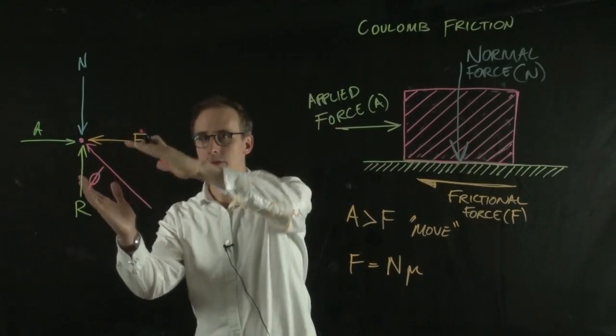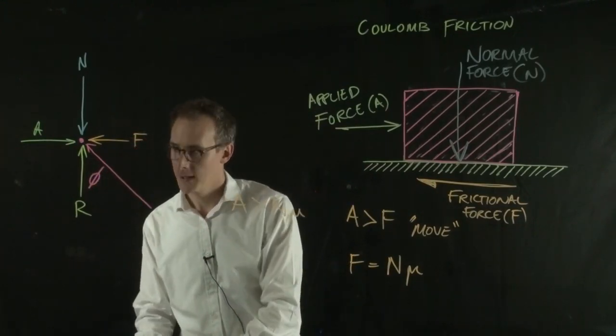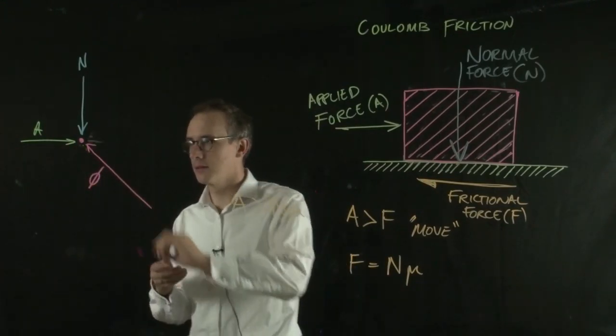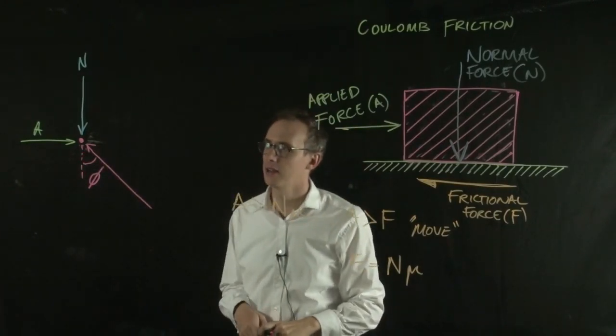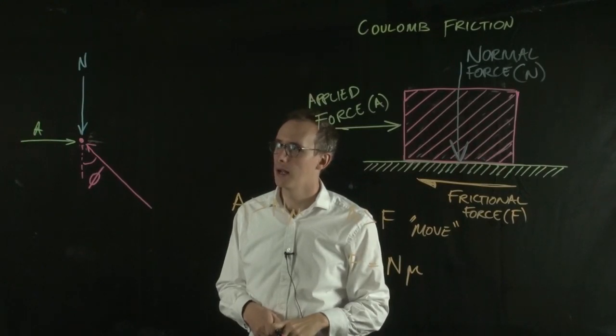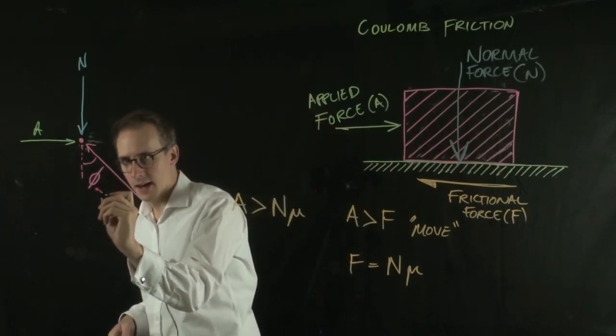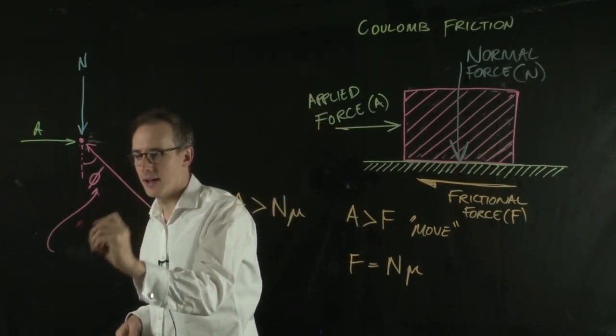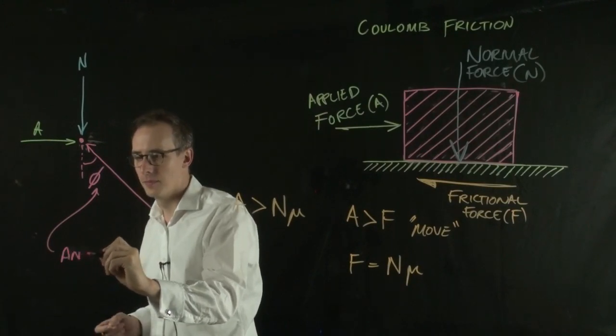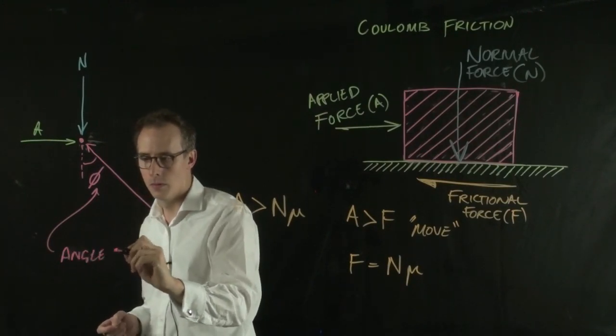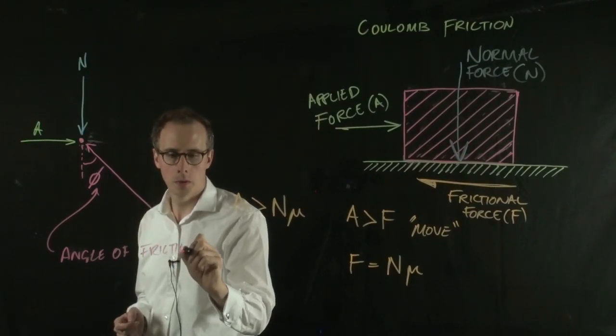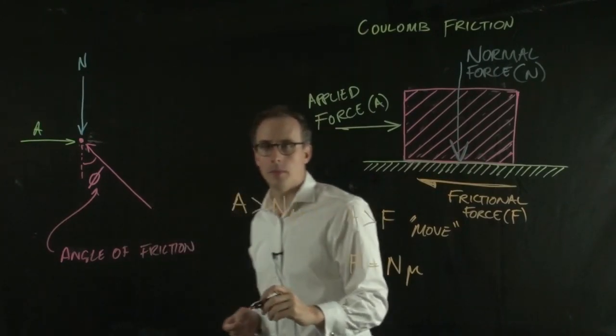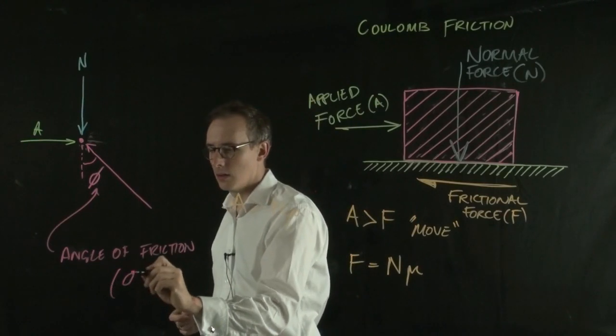We've combined these two forces into a single force acting at φ from the vertical. This angle is given a special name: the angle of friction, given the symbol φ.